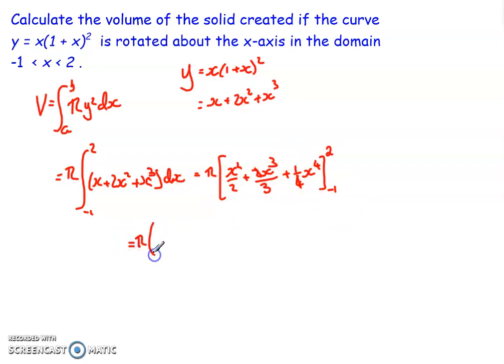What I'll end up getting is pi times, now the upper limit is going to be 2 squared over 2 plus 2 times 2 cubed over 3 plus 1 quarter times 2 to the power of 4. Take away the same expression this time at the limit of negative 1: negative 1 squared over 2 plus 2 thirds times negative 1 cubed and plus 1 quarter times negative 1 to the power of 4.